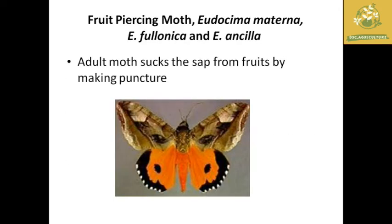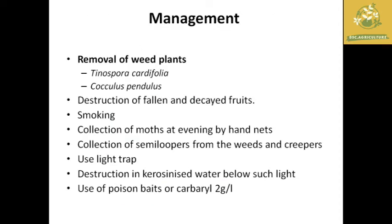The next pest is the fruit piercing moth, with scientific name Eudosimma materna and other species including Eudosimma and Achaea. These adult moths suck sap from fruits and make punctures in the fruit. Management includes removal of weed plants in the Amla field, destruction of fallen and decaying fruits where insect eggs may be present, smoking as an important management technique, collection of moths in the evening using hand nets, and use of light traps. Poison baits or calcium carbide at 2 grams per liter can also be sprayed on Amla plants.